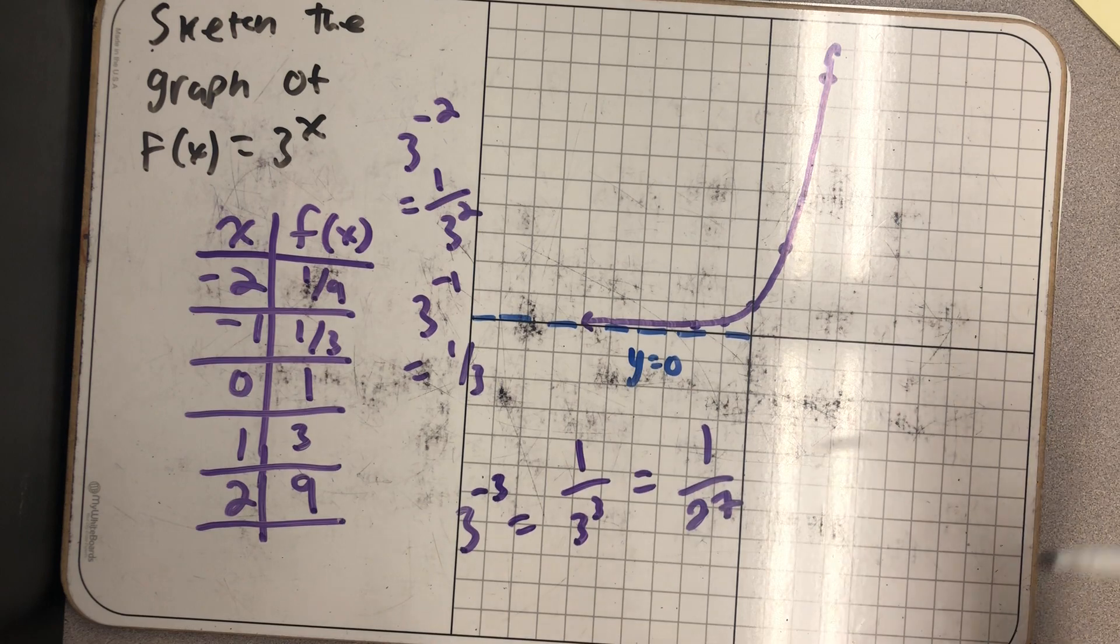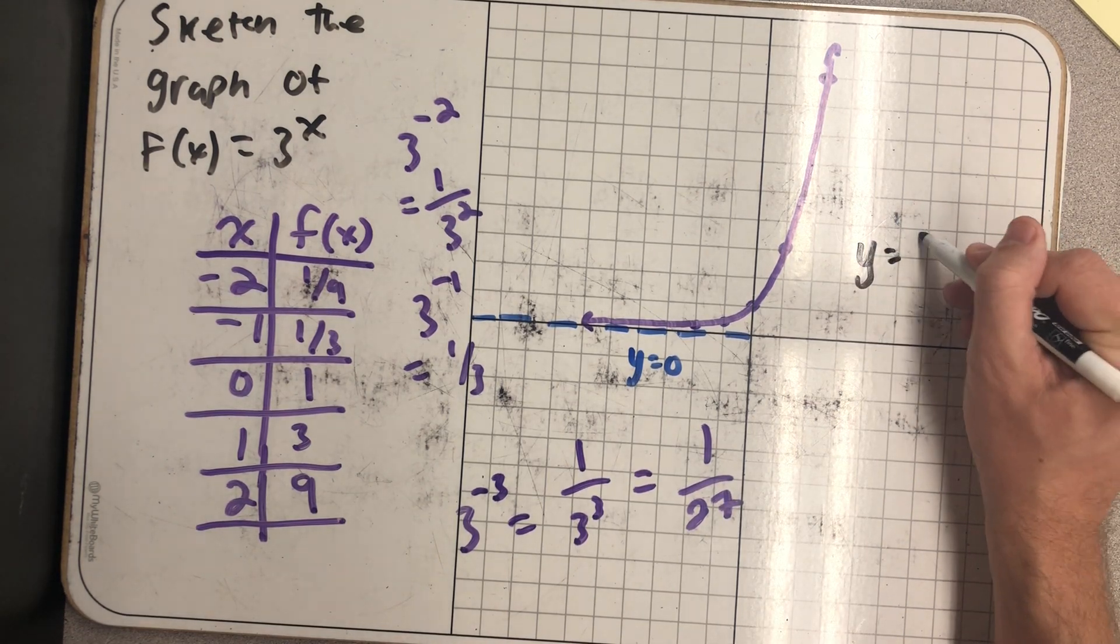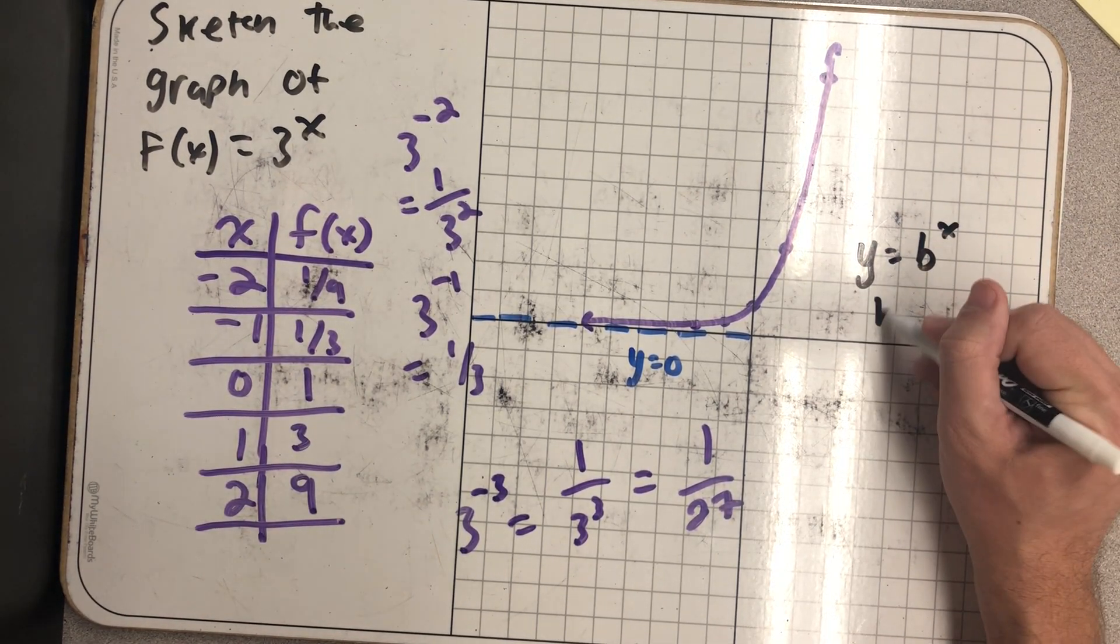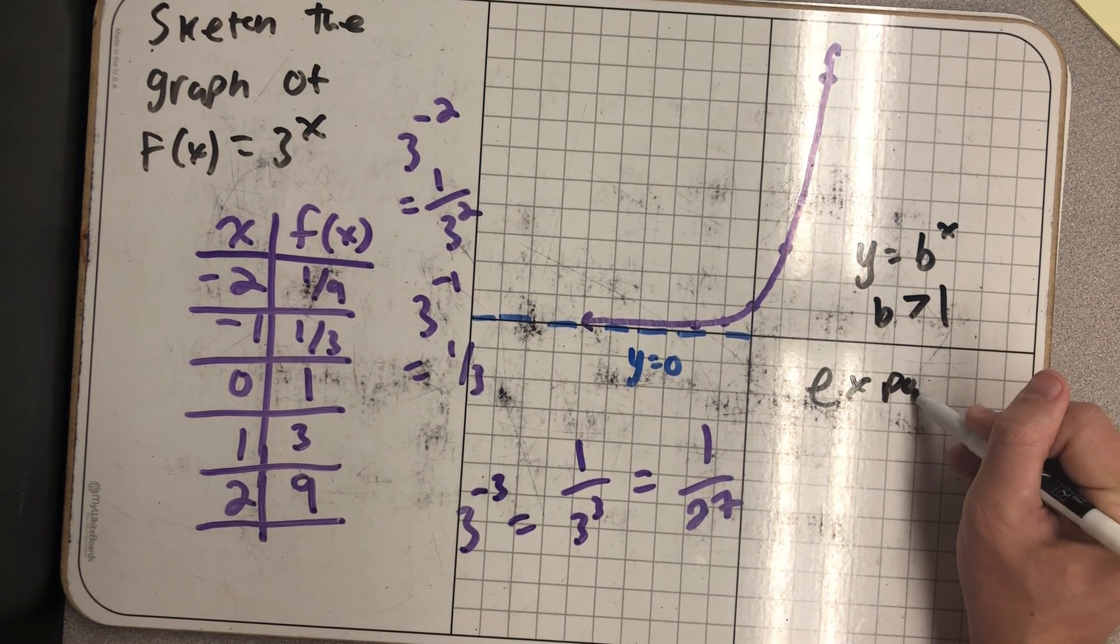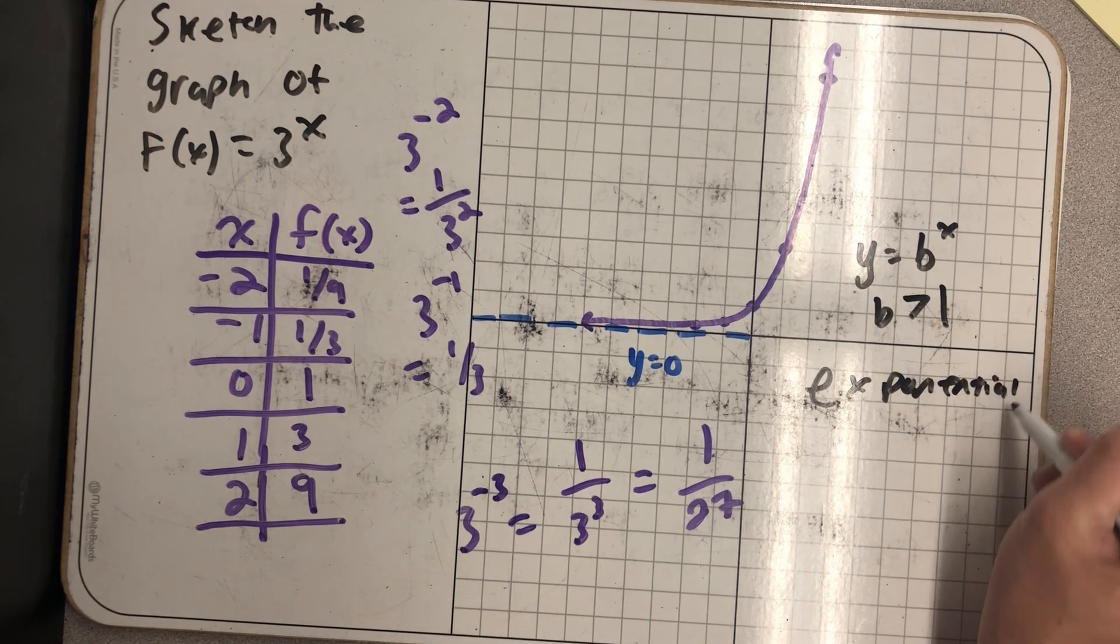This is the shape I always get when I graph y = b^x if b is larger than 1. I get exponential growth.